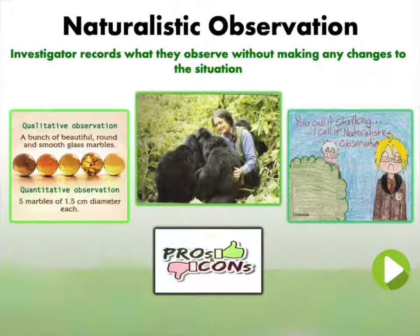One of the best things about naturalistic observation is that if the researcher can watch behavior without people knowing they're being watched, we can limit what's called the Hawthorne effect — or reactivity effect — the tendency for people to alter their behavior when they know they are being observed. For example, a researcher watching kids play at a playground to measure aggressiveness could just sit on a park bench and watch, and no one would know what they're doing.